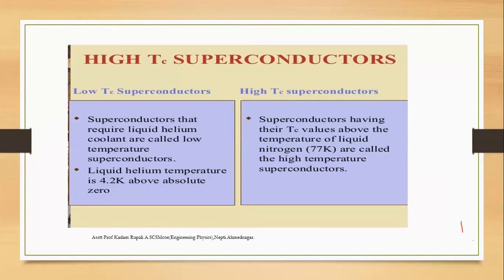The substance that shows superconductivity at low temperature is known as a superconductor. Critical temperature Tc is the temperature at which the resistance of a specimen becomes zero. At that temperature, the specimen enters the superconducting state, and that temperature is called Tc.